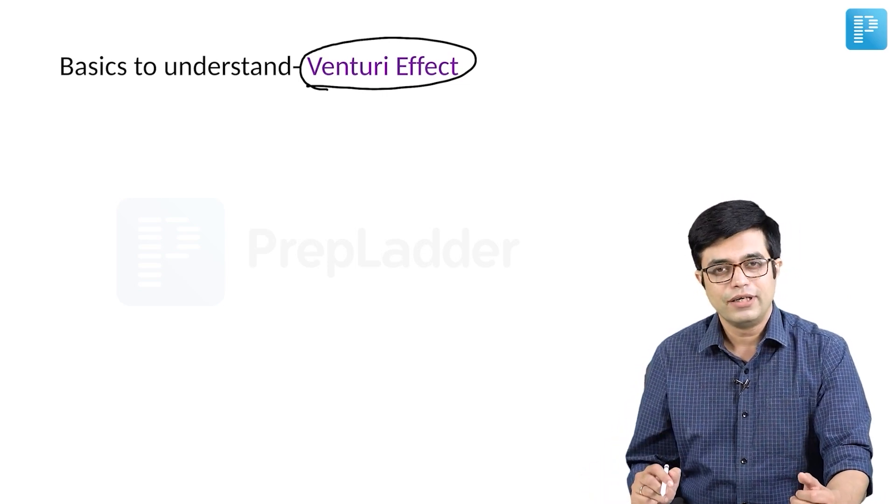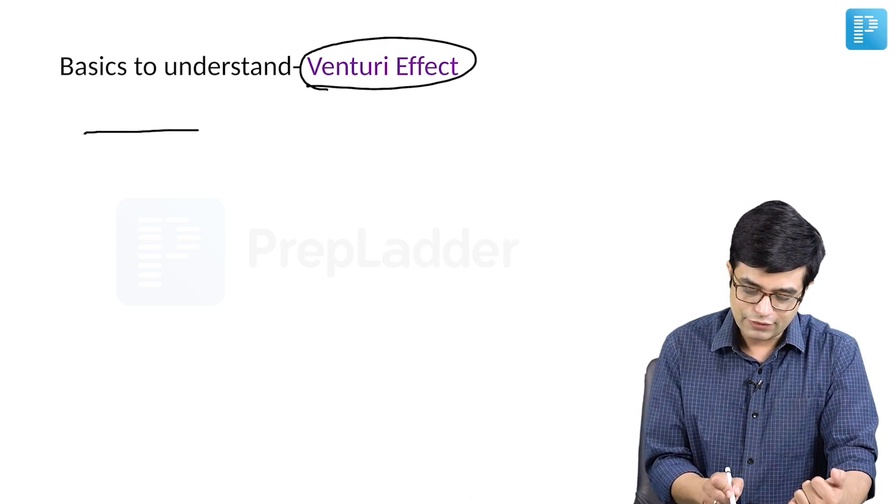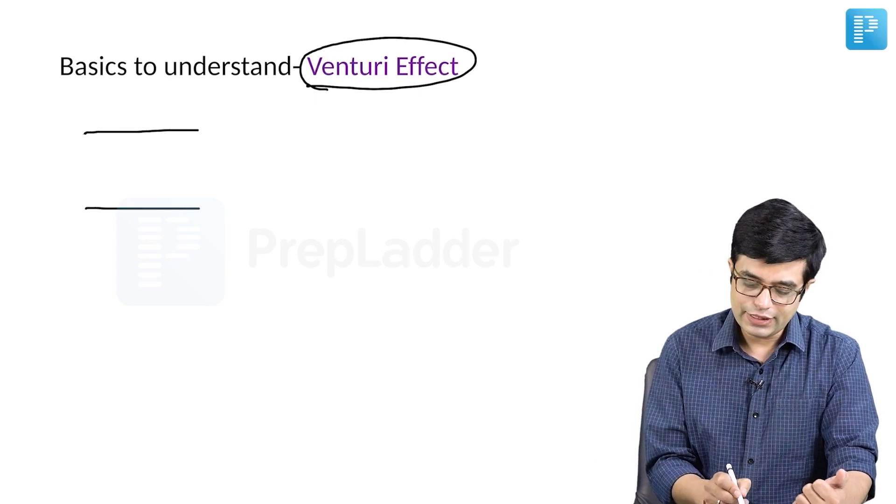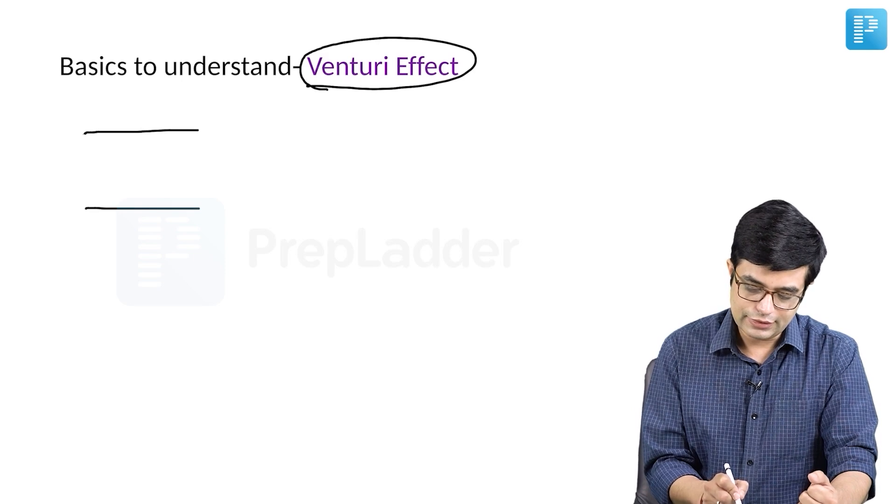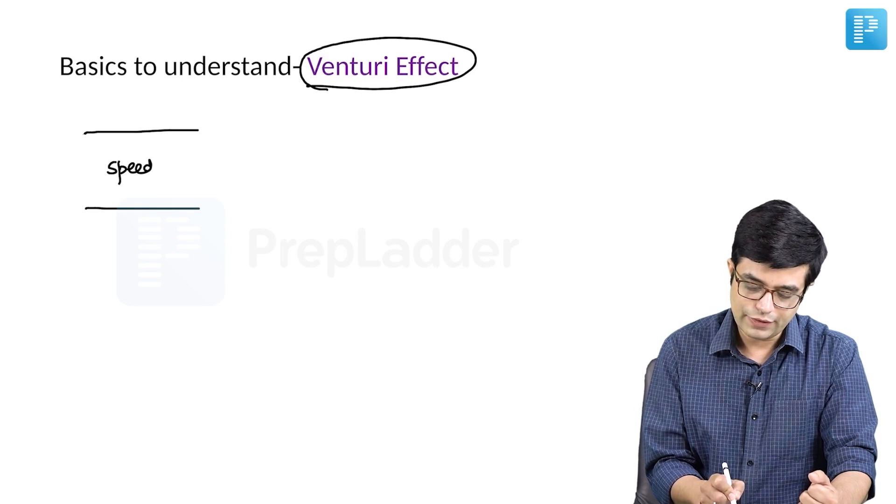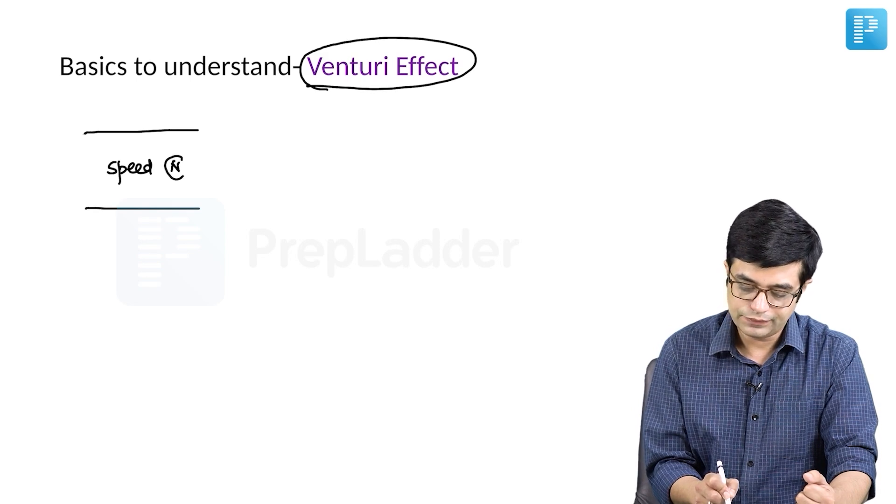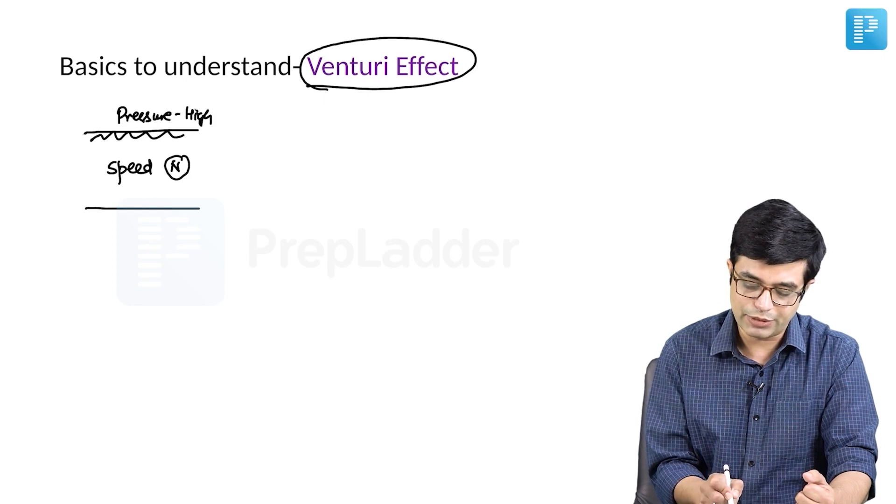Venturi effect is a physics principle. Suppose there is water flowing in a tube. Whenever there is water flowing in a tube, the speed of flow will be normal, whereas outside pressure will be high. Pressure at these boundaries will be high.